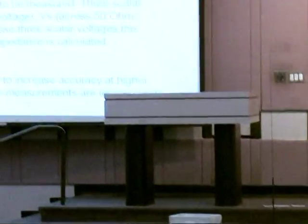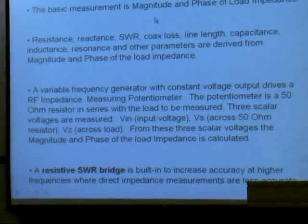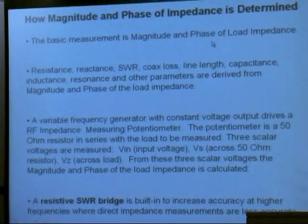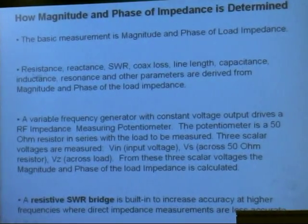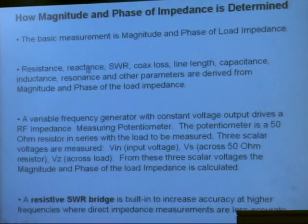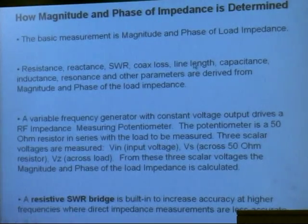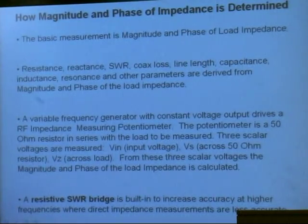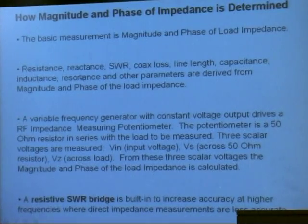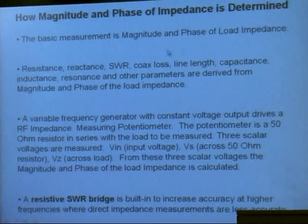How do you measure the magnitude and phase? Well, the basic measurement is magnitude and phase. Once we measure the magnitude and the phase of the load impedance, then we derive all the rest of the stuff. We derive the resistance, the reactance, the SWR, the coax loss, the length of the coax line, the capacitance that you're measuring, the inductance, the resonance. All of those things are taken just from that one measurement there.